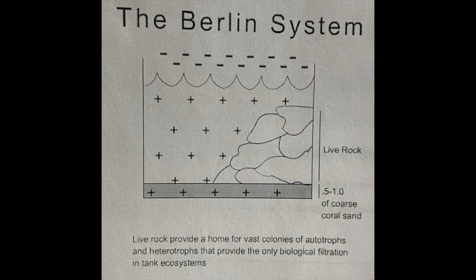The next method is the Berlin system. The Berlin system used something just a little different than the other systems, but it too had its problems. Basically, the Berlin system is what a lot of people use today — it's a shallower bed of 0.5 to one inch of coarse coral sand. When people do planted tanks and lay substrate directly on the bottom, that is called a Berlin system.